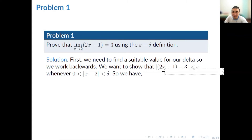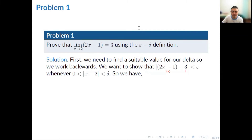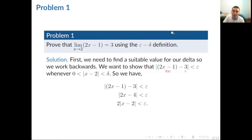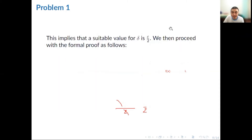Let's start by finding a suitable value for delta. Note that inside the absolute value, 2x minus 1 is f of x, and 3 is our limit. We simplify the expression inside the absolute value to get 2x minus 4, which we express as the product of 2 and the absolute value of x minus 2. Dividing both sides by 2, the 2's cancel and we are left with the absolute value of x minus 2 is less than epsilon over 2. This implies that a suitable value for delta is one-half epsilon.